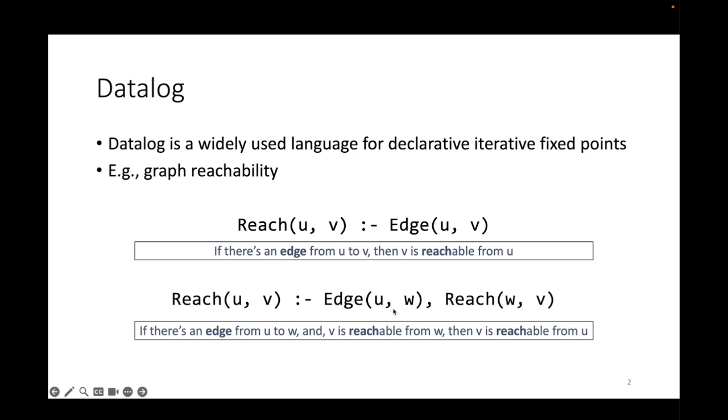The second rule says that if there's an edge from u to w and we already know that v is reachable from w, then we can conclude or derive the fact that v is reachable from u.